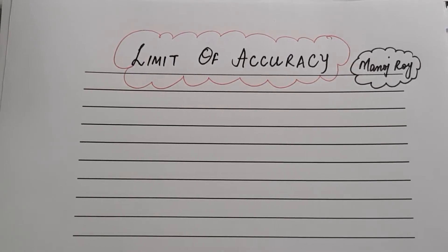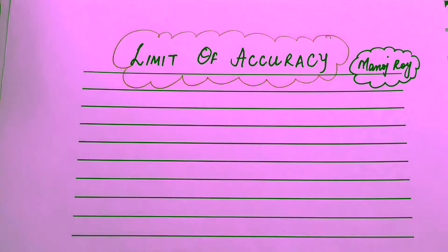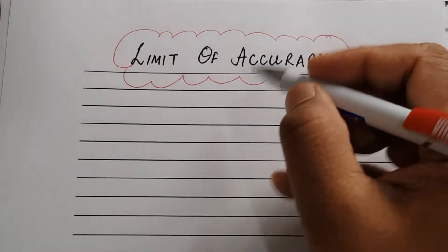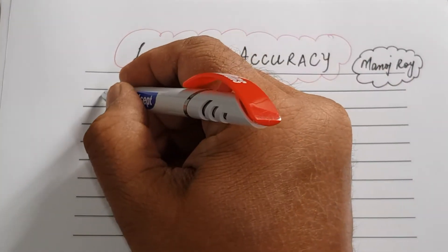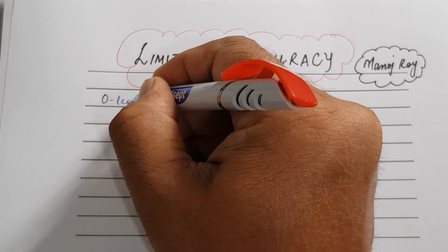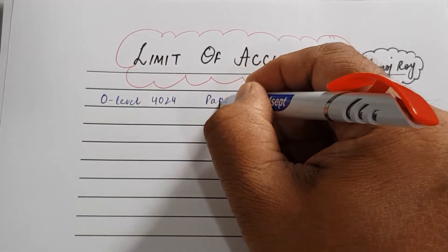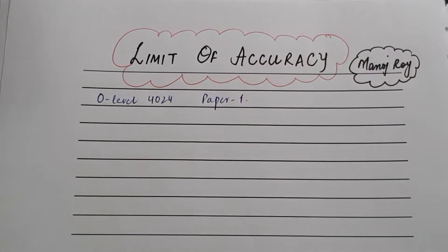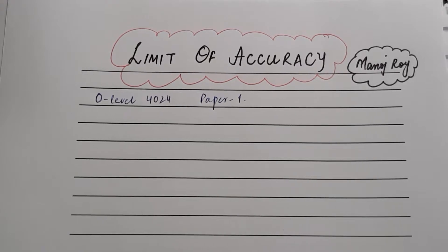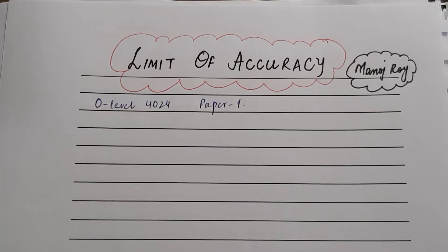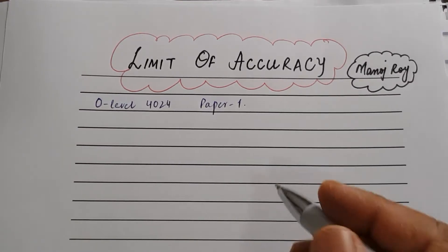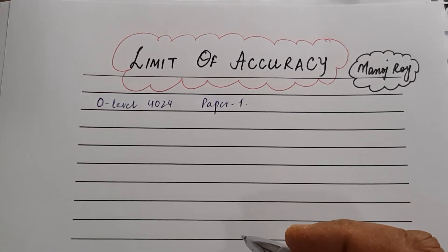Hello everyone, this is Manoj Roy. Today's topic is Limit of Accuracy. This topic normally comes in O-levels paper 4024 in paper one, so you cannot use the calculator. I found this topic much easier for students, but the explanation of how we can find the lower bound and upper bound of any number is important.